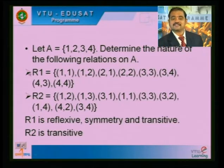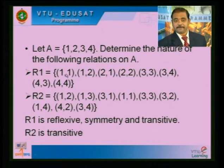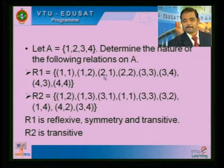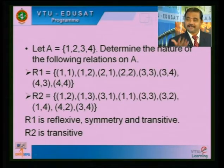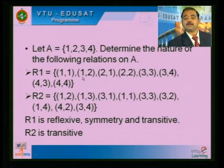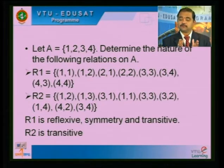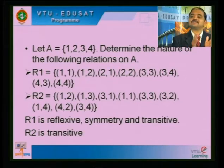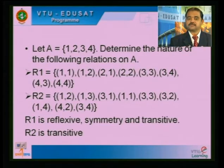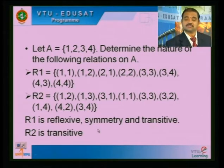Within the relation elements, checking symmetry: for (1,1), (2,2), (3,3), (4,4) — reflexive elements are their own symmetric pairs. For (1,2), we need (2,1) — it is there. For (3,4), we need (4,3) — it is there. So within this relation, symmetry exists. R1 also possesses the transitive property: (1,1) and (1,2) gives (1,2) — it is here. (1,2) and (2,1) gives (1,1) — it is here. Any elements you take, the combination is also in the set. Therefore R1 is transitive.